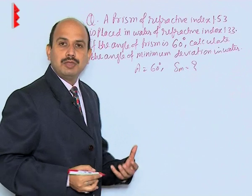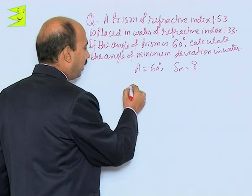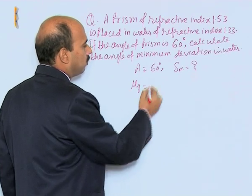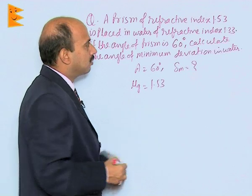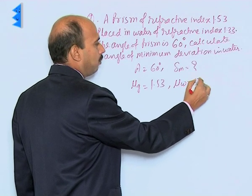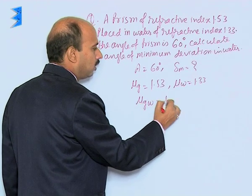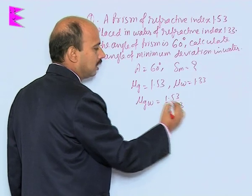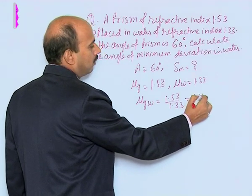When the prism is put into the liquid, the refractive index changes. We can write: mu_glass = 1.53 (the material used for making the prism) and refractive index of water = 1.33. So, the refractive index of glass with respect to water is 1.53 / 1.33, which gives 1.15.